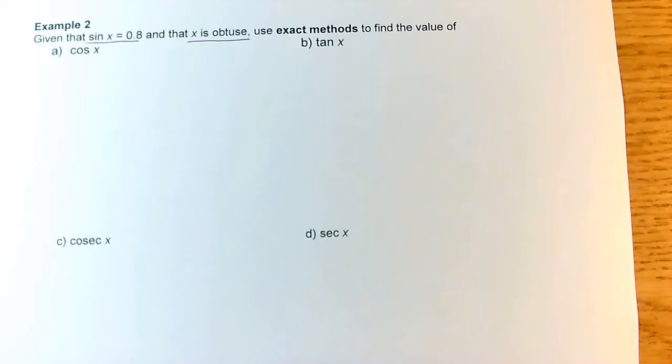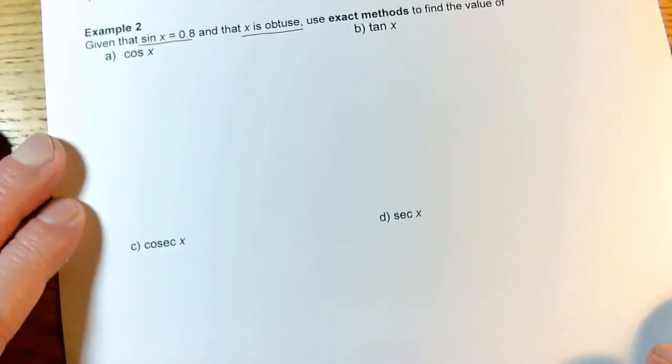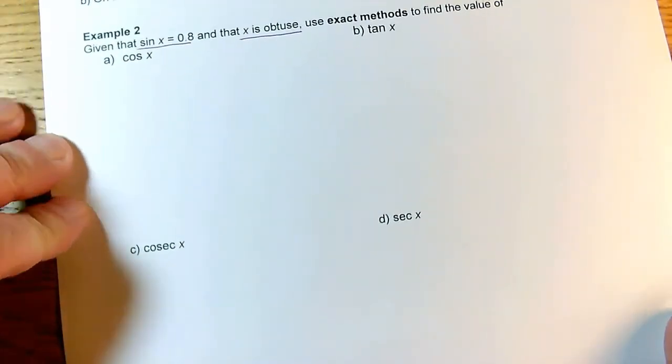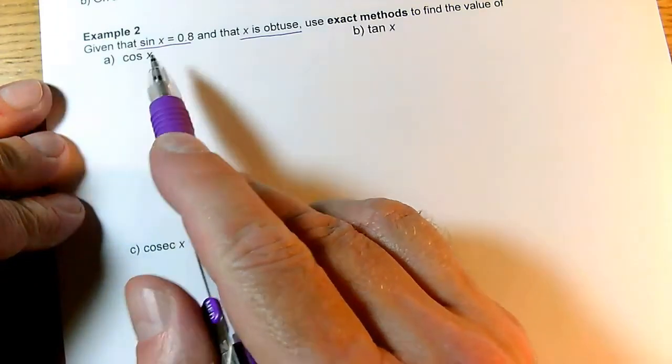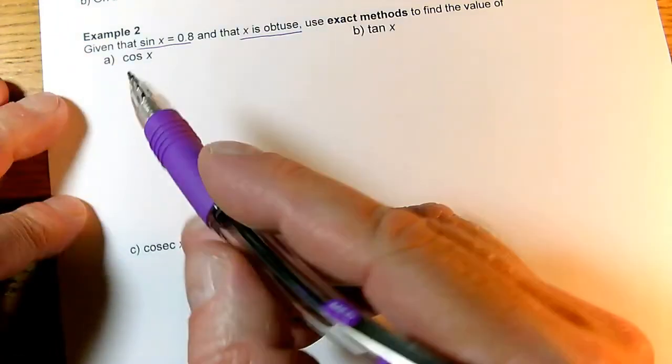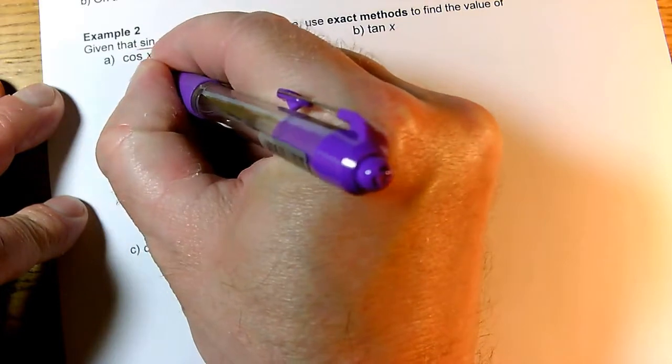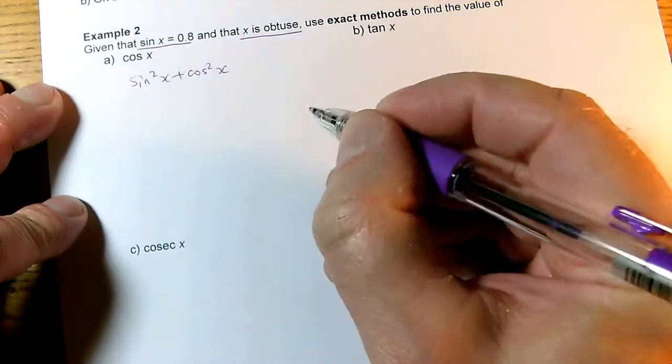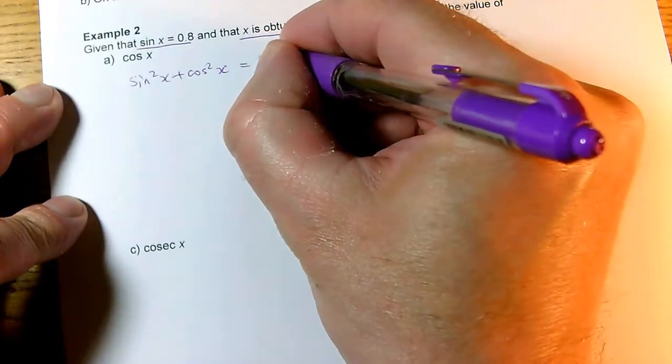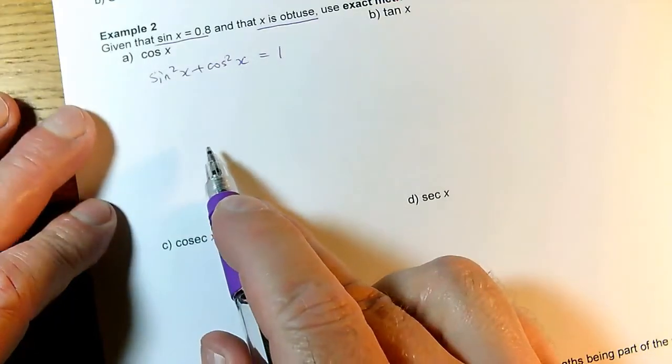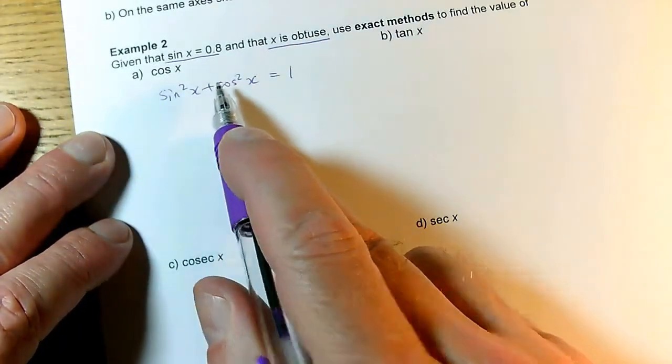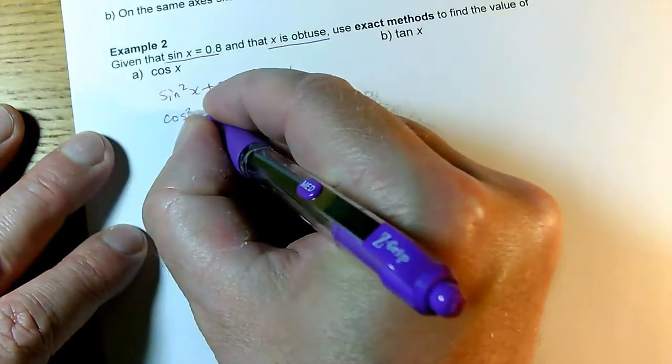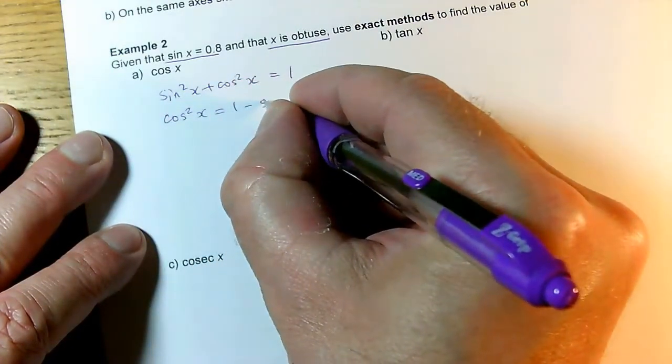So we need to use the trig identities we know, which is a Core 2 concept. If we know sin x, we can get cos x, because sin²x + cos²x = 1 for any angle x. Therefore, if I want to know cos x and I already know sin x, I can say that cos²x = 1 - sin²x.